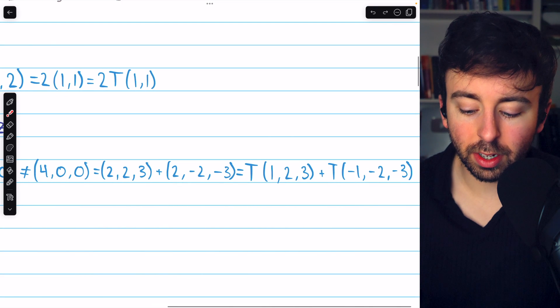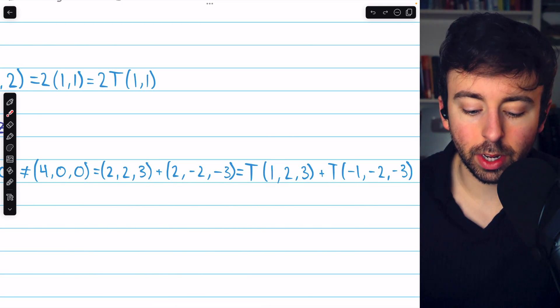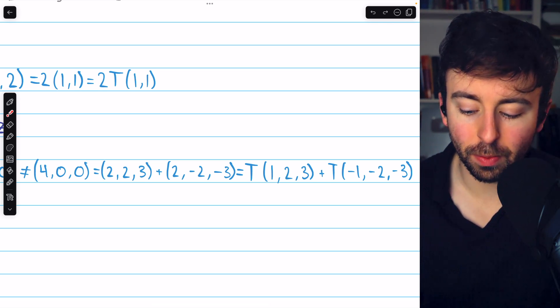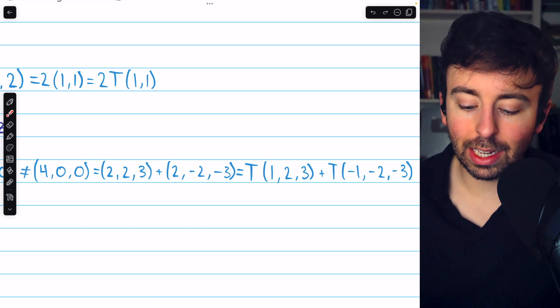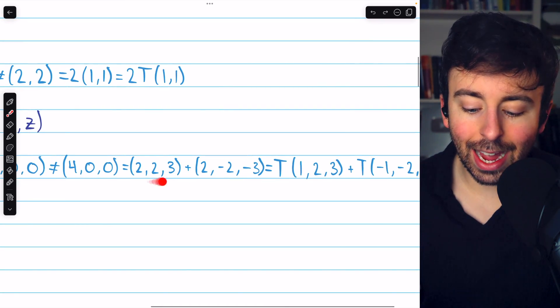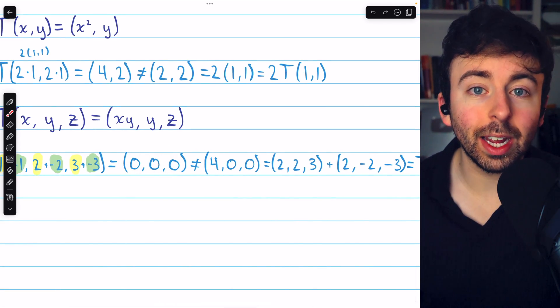And this is not equal to what happens if we transform the vectors first and then add them. If we transform these vectors first, (1,2,3) gets mapped into (2,2,3). Remember, it multiplies the x and y components together. (-1,-2,-3) gets mapped into (2,-2,-3). And when we add these two images together, we don't get (0,0,0) like we got before. We get (4,0,0).